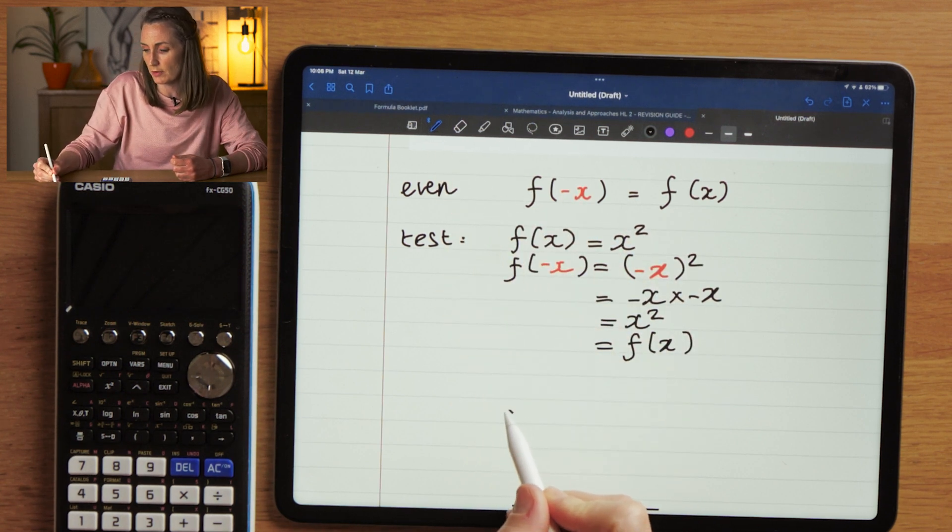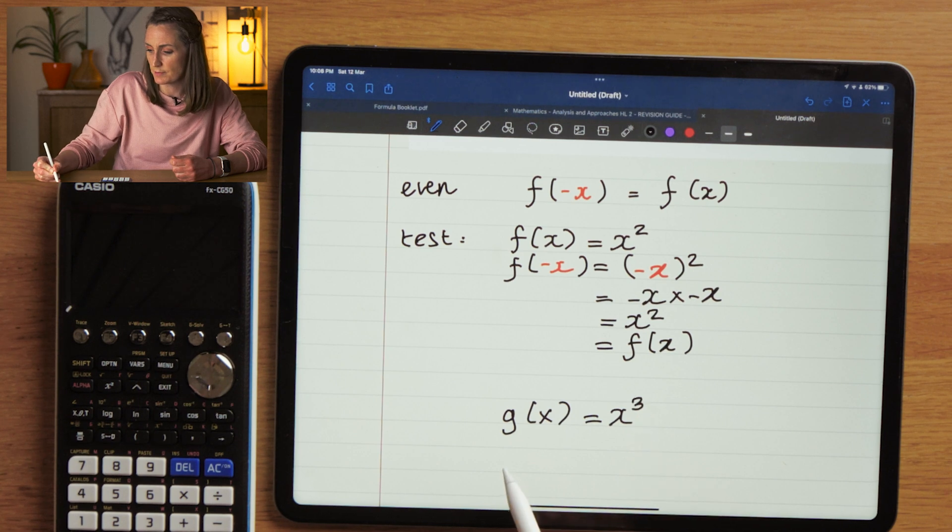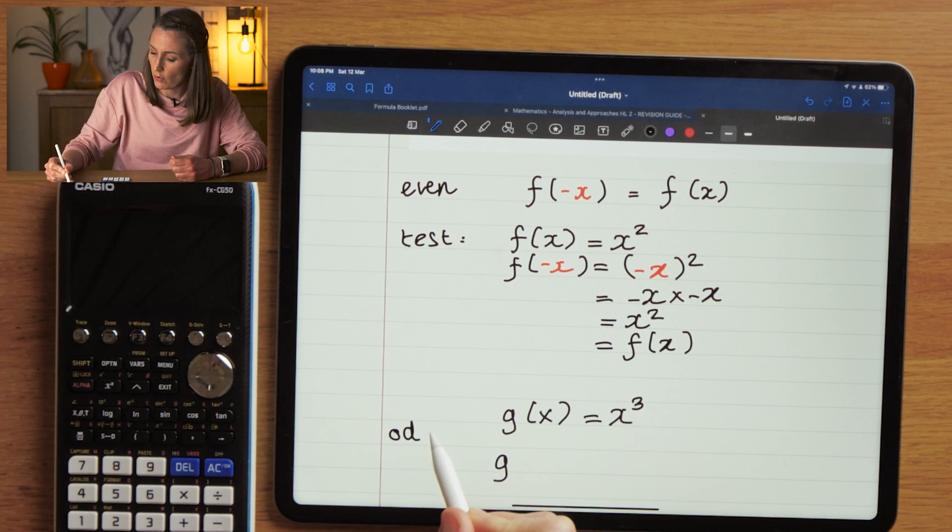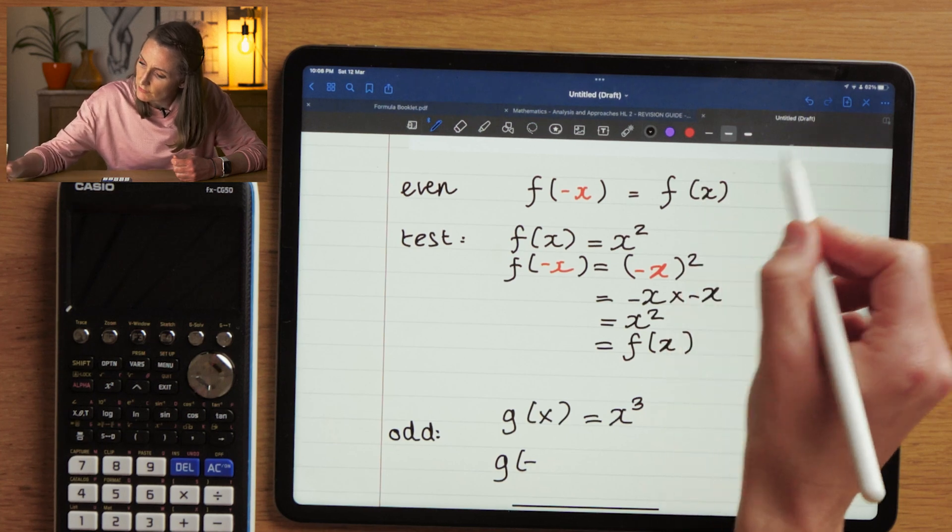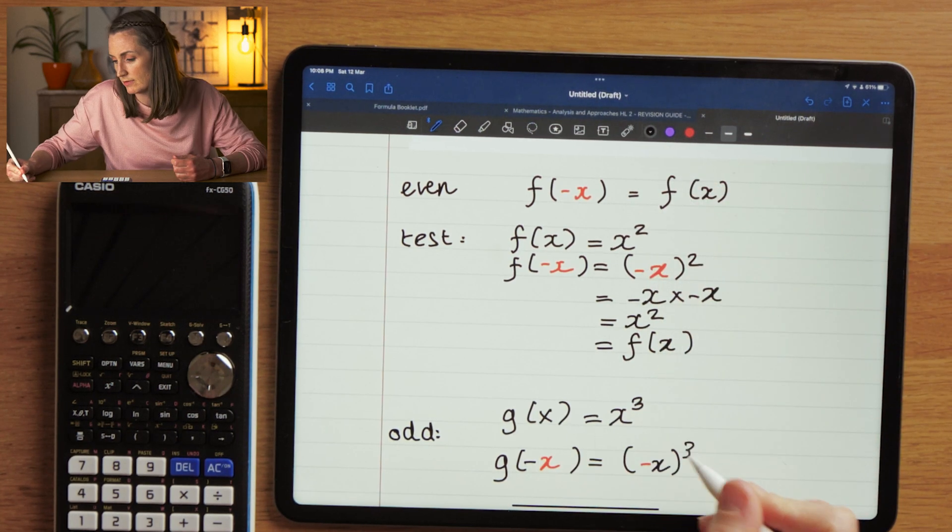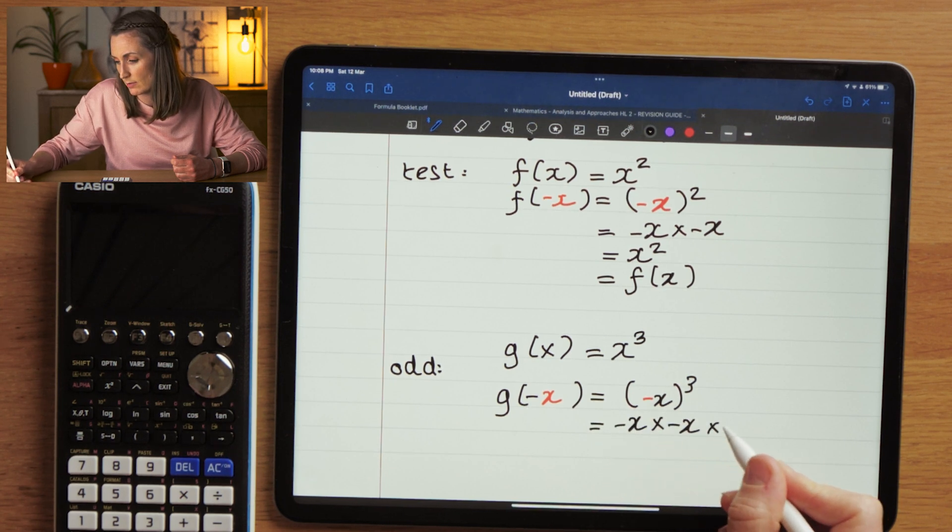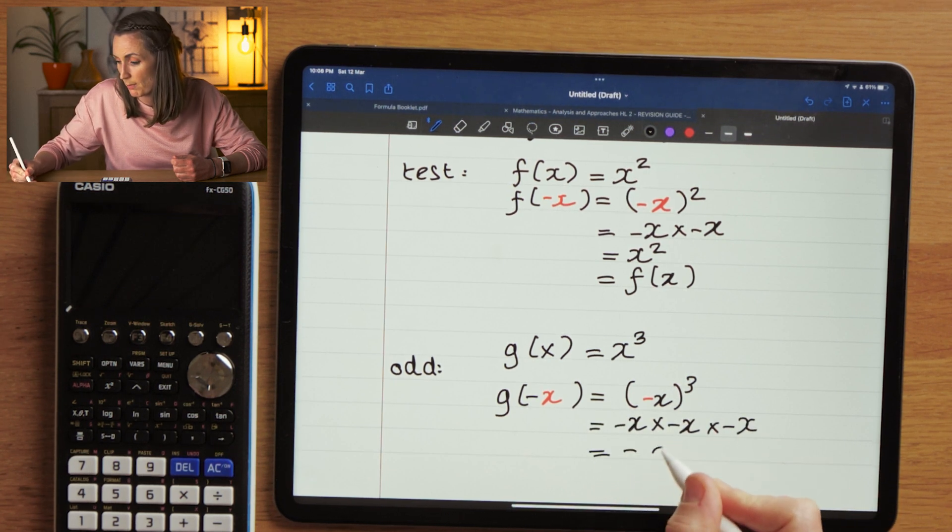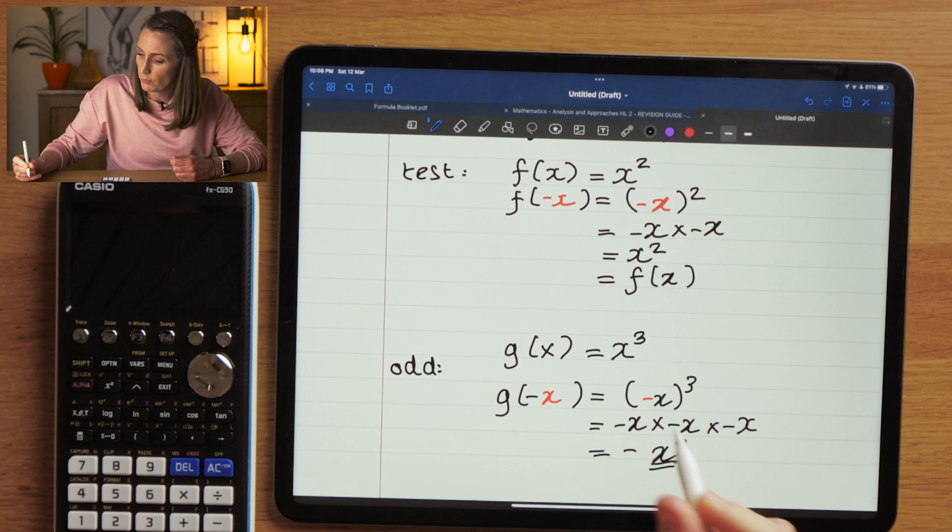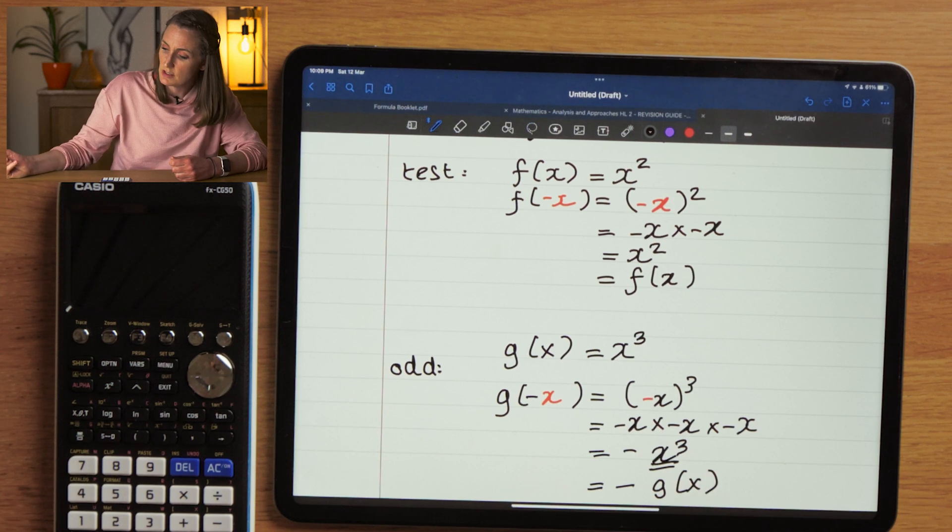Okay, let's consider a different function. Let's consider what an odd function is. This is an example. I'm going to call this g of x, and I'm going to say that's x cubed. So we're looking now at an odd function. So we're going to have g of minus x here: minus x cubed, which would be minus x times minus x times minus x, which would be minus x cubed. But remember, we said that x cubed was g of x, so that would be minus g of x. So this is an odd function.